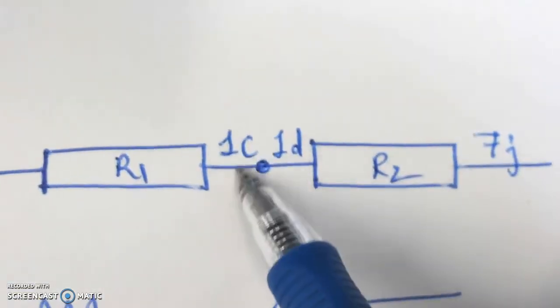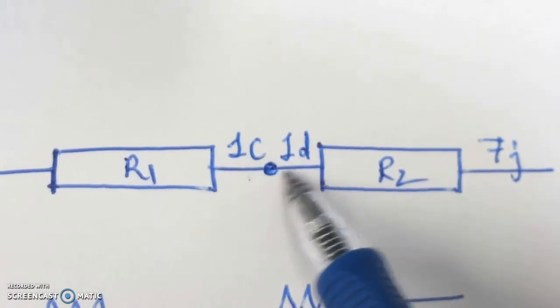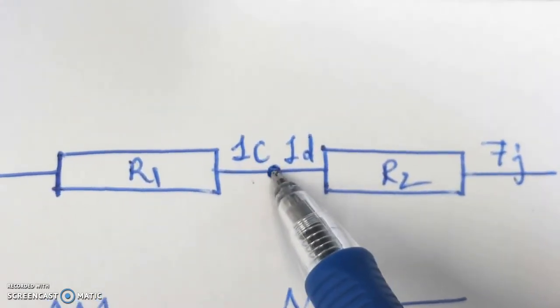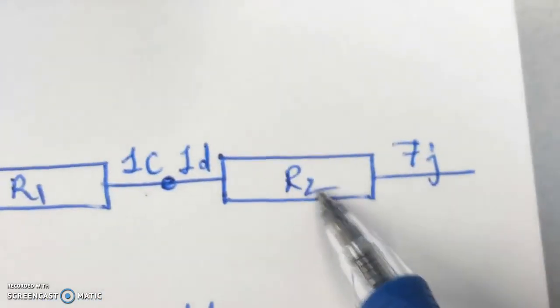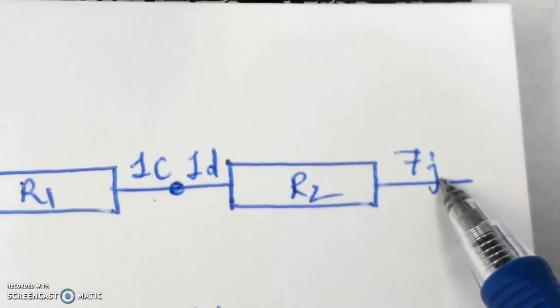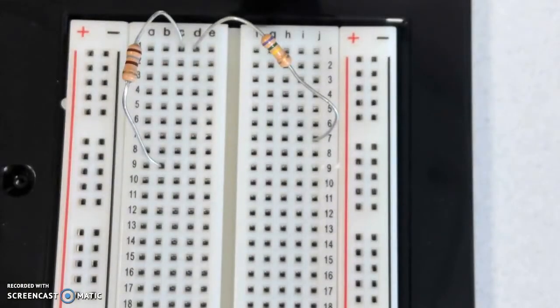So if I was looking at it, this is what it looks like. So nine B, one end connects to one C. Row one C and D are connected together, so that connection is made internally, and the other end of that resistor is connected to seven J. Okay, so that's how a breadboard really works.